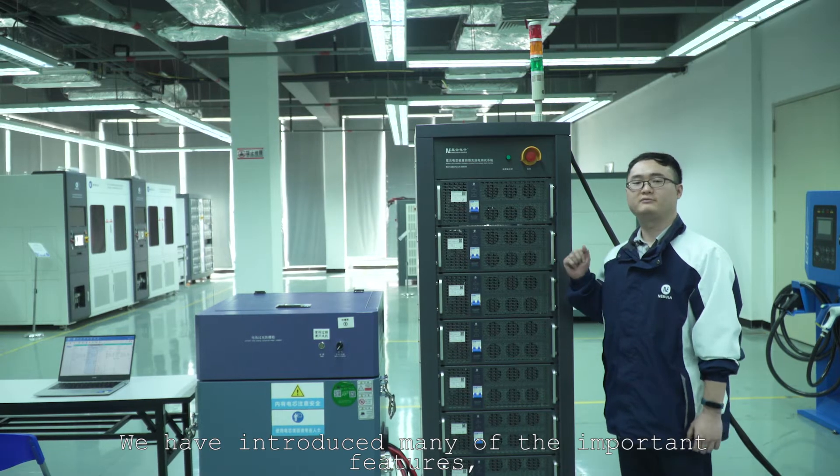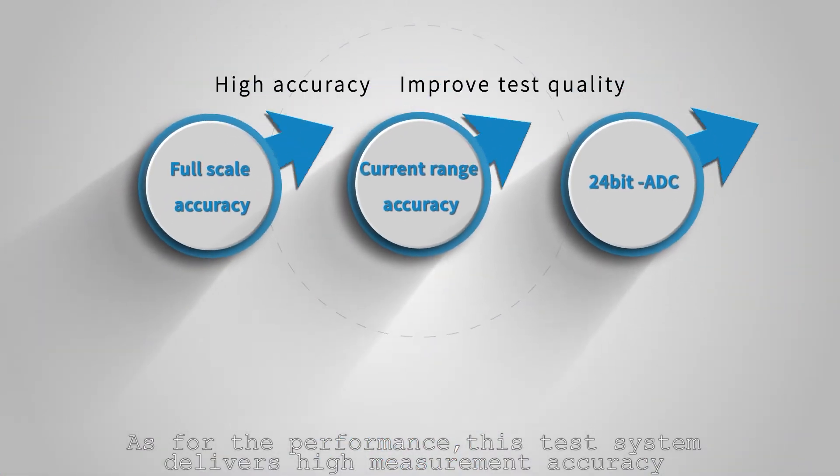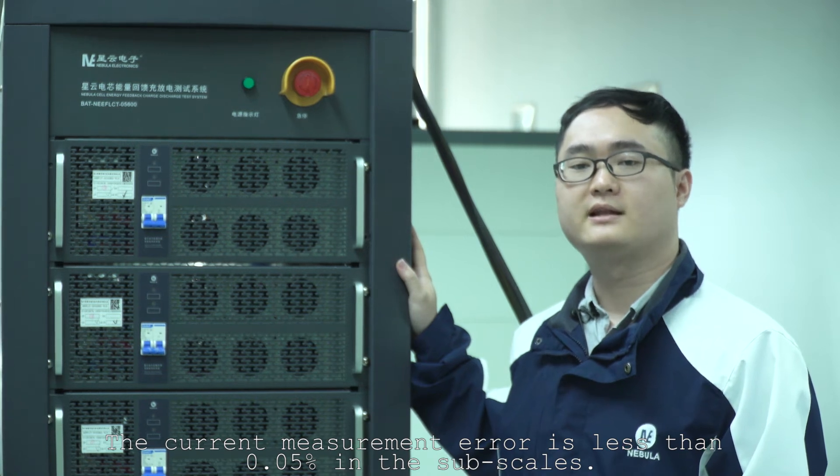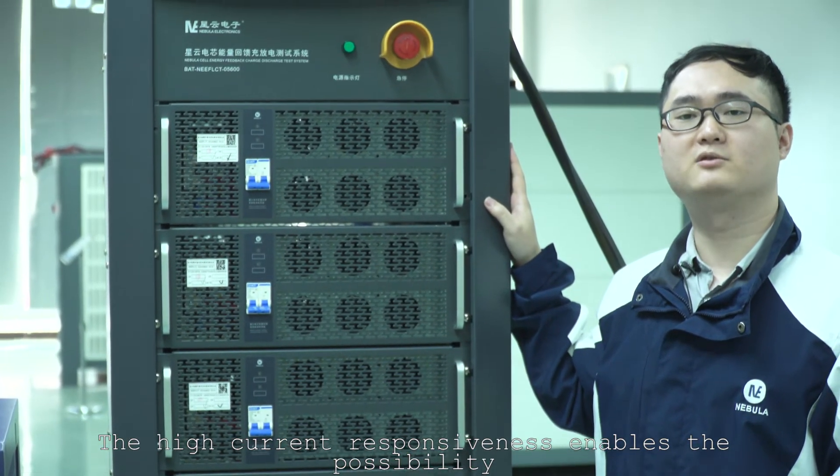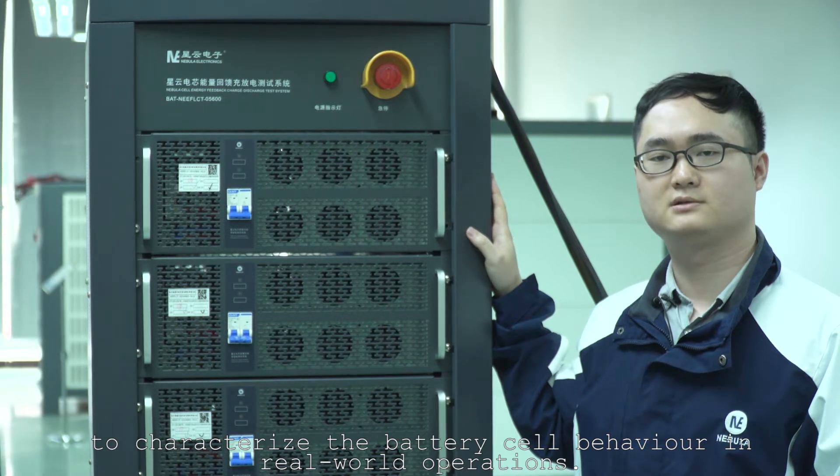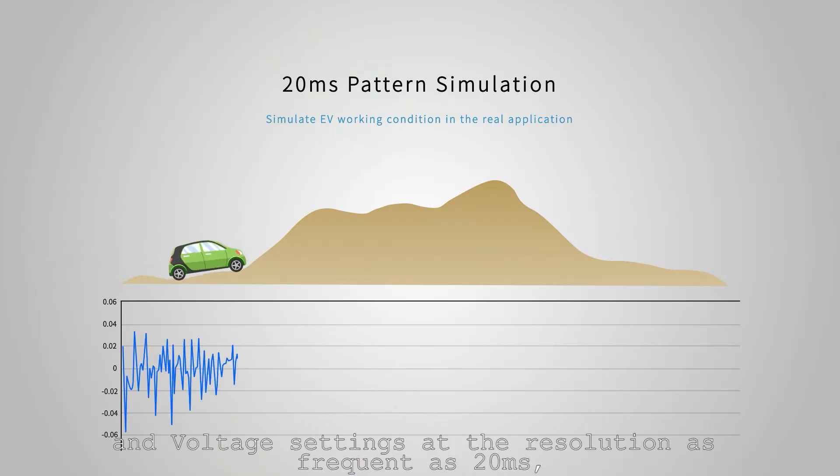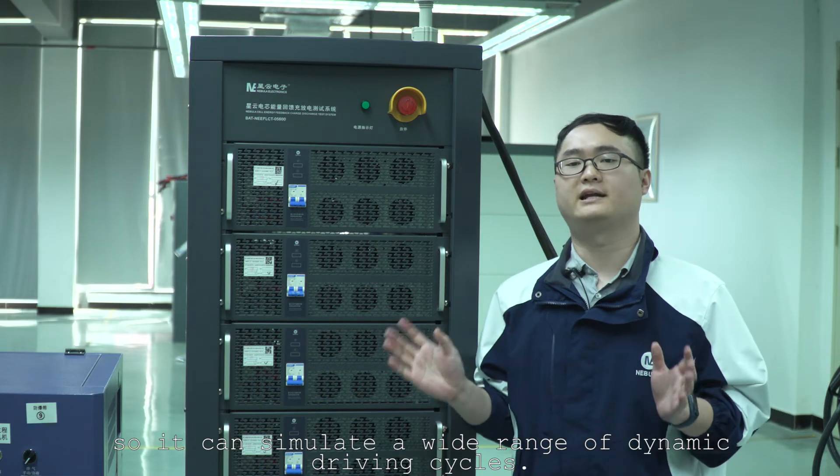We have introduced many of the important features. Now let's dig into some of the detailed specifications. As for the performance, this test system delivers high measurement accuracy at both full-scale and four different subscales. The current measurement error is less than 0.05% in the subscales. The high current responsiveness enables the possibility of running highly dynamic transient tests to characterize the battery cell behavior in real-world operations. Nebula's test system also supports current and voltage settings at the resolution as frequent as 20ms, so it can simulate a wide range of dynamic driving cycles.